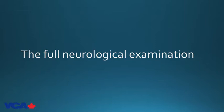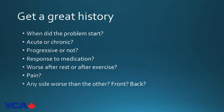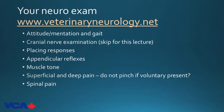The full neurological exam starts with a fantastic history. Where did the problem start? Was it acute or chronic? Did it progress? Is it worse after rest or exercise? Any response to medication? Any pain noted by owners? Which legs are worse? Is it waxing and waning? The full neuro exam is available at www.veterinaryneurology.net. For this lecture we'll skip cranial nerves and focus on spinal cord, but mentation and attitude must be assessed. If mentation is abnormal, you're dealing with a brain problem, not spinal cord.